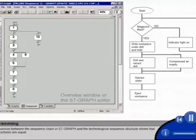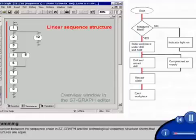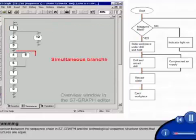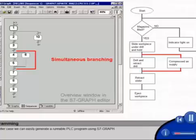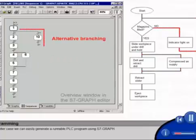A comparison between the sequence chain in S7 graph and the technological sequence structure shows that their structures are equal. In the latter case, we can easily generate a runnable PLC program using S7 graph.